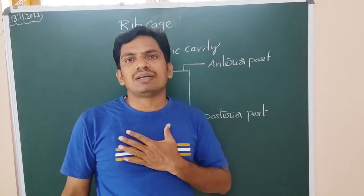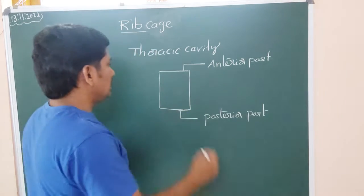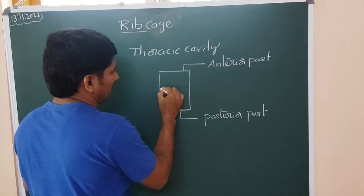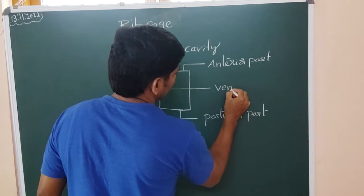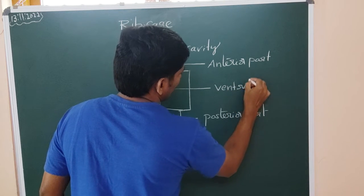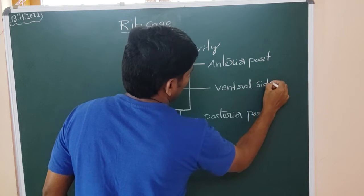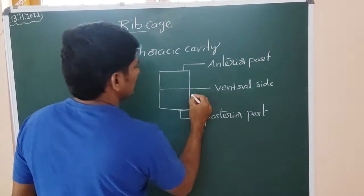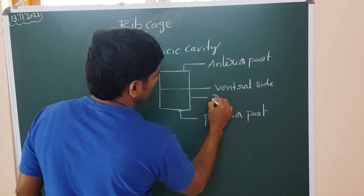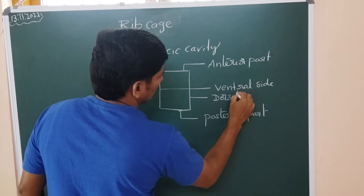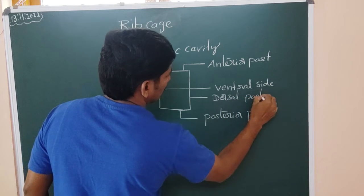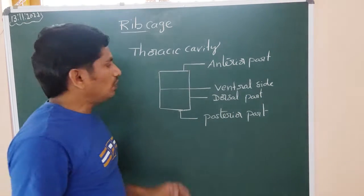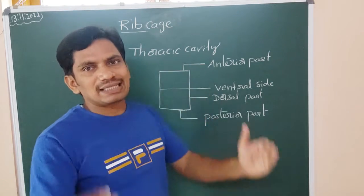And here, ventrally also some support is required. If you feel, this is the ventral side. Ventral side or the ventral part. And opposite to that, which is dorsal part. Dorsal part. Now, along with that, lateral side is also there.